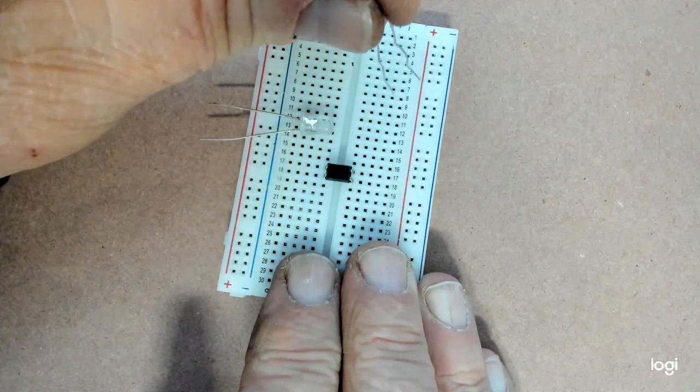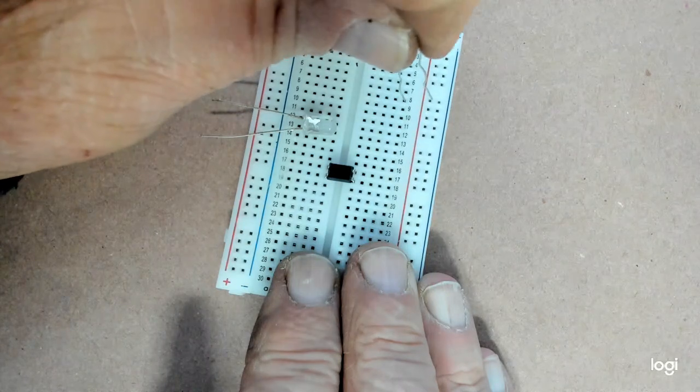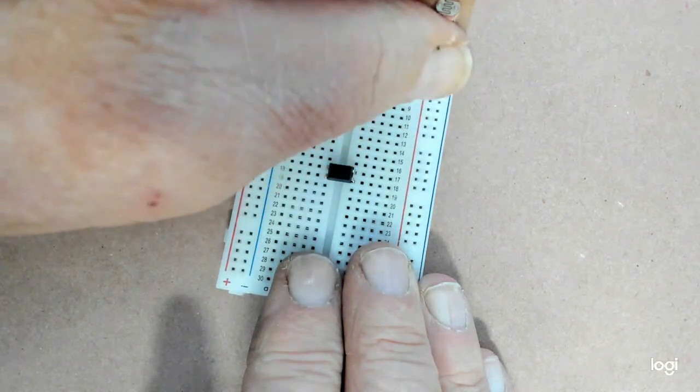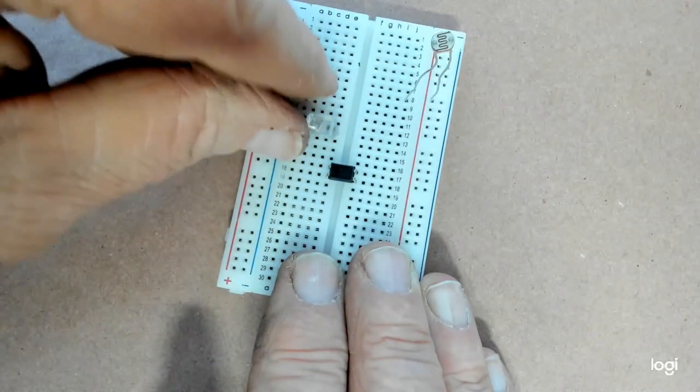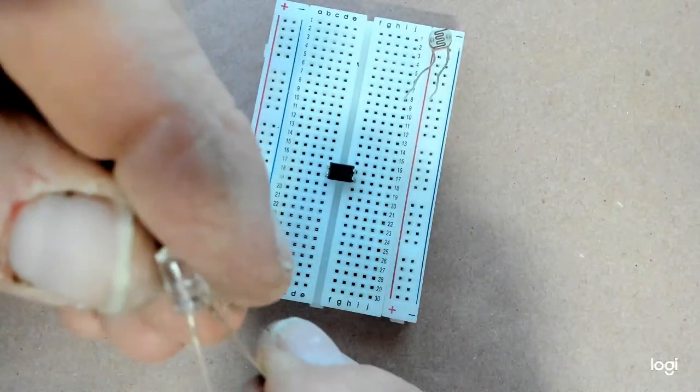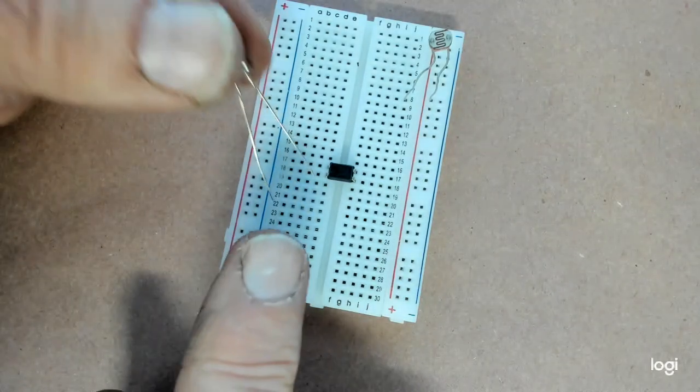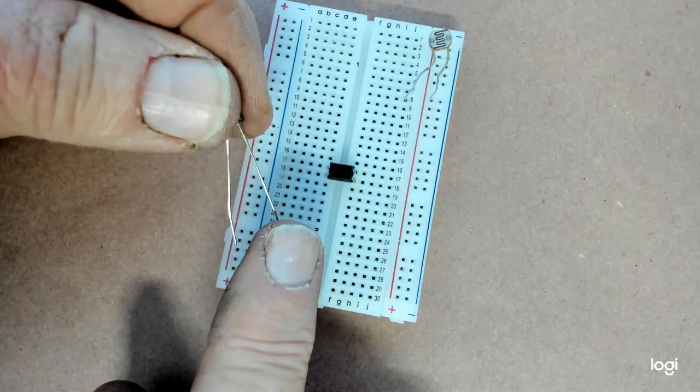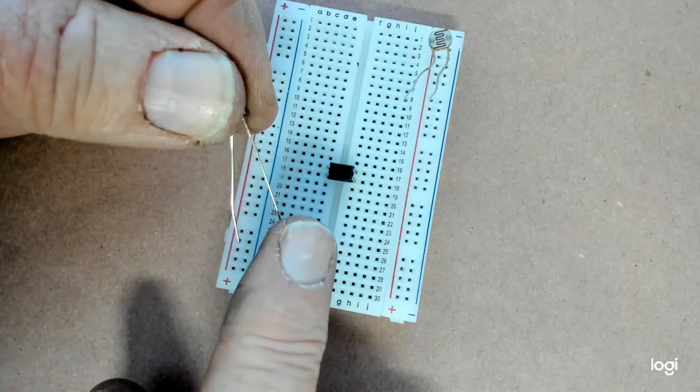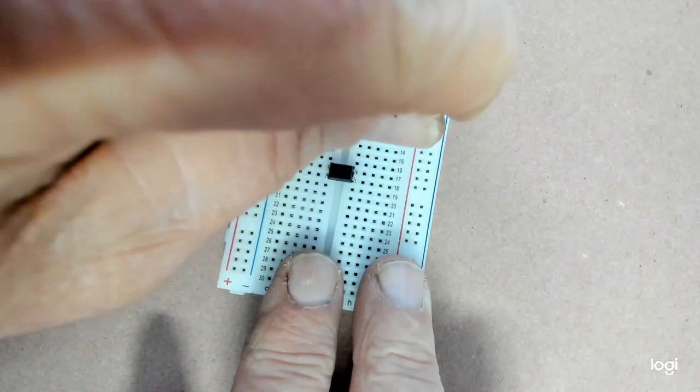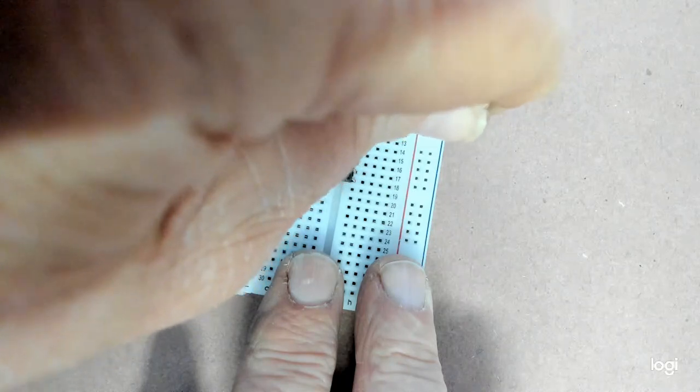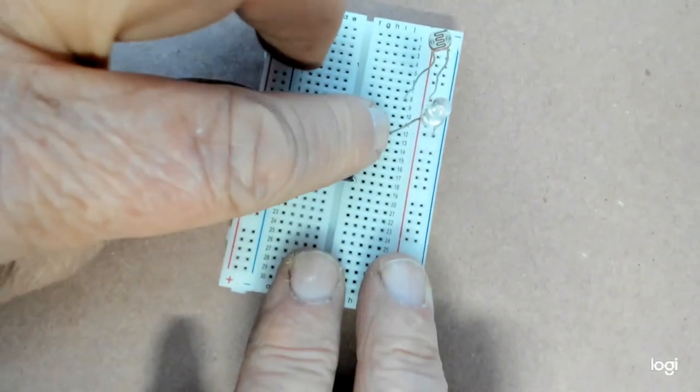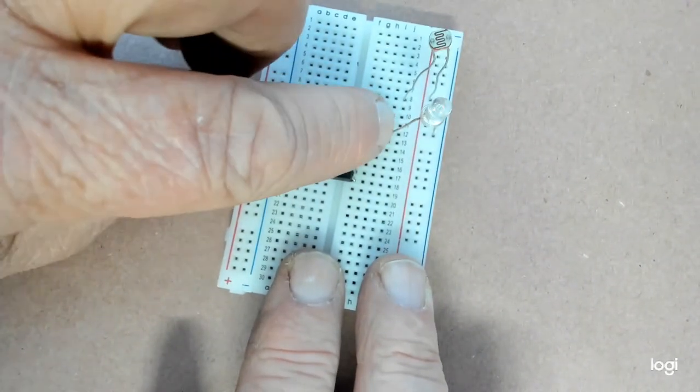I'm going to take the photo cell, and I'm going to put that into the positive rail. If I can put it into this cheap board here. Then I'm going to take the cathode, or negative of the LED, and I'm going to put that into the negative rail. And then the anode, I'm just going to put it out here, into the breadboard.